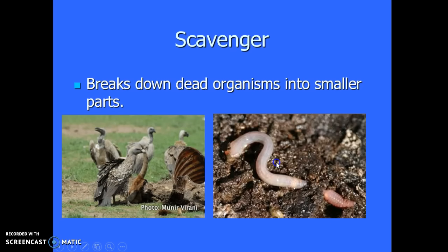Then you have something called a scavenger. Scavengers are animals that usually eat dead organisms. A worm will often eat dead plant tissue and dead animal tissue. Vultures, for example, eat just dead animals. They're considered scavengers because they help break down those dead organisms into smaller parts.